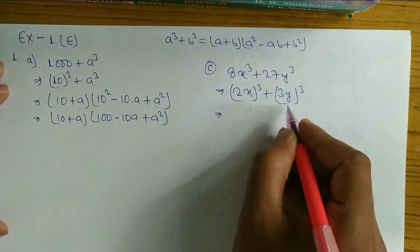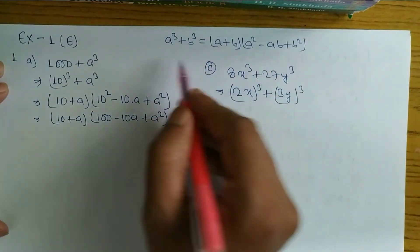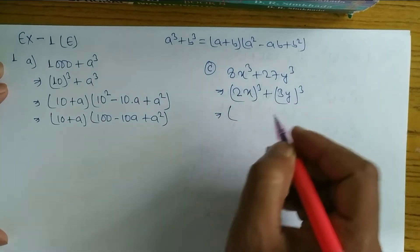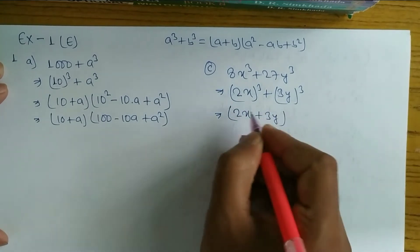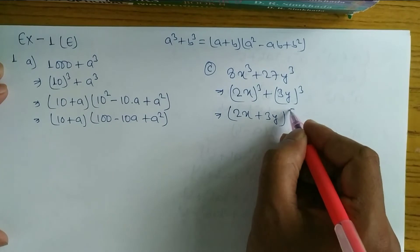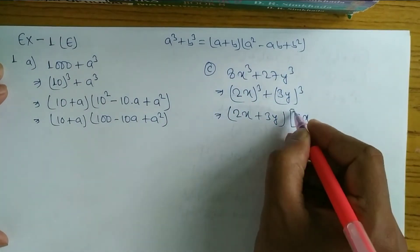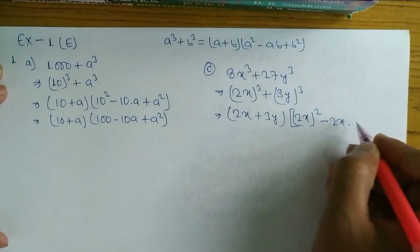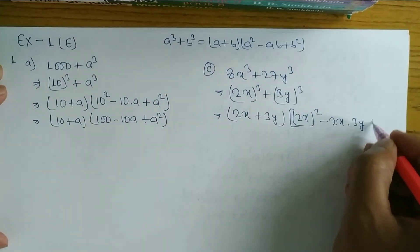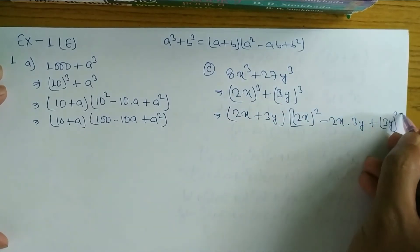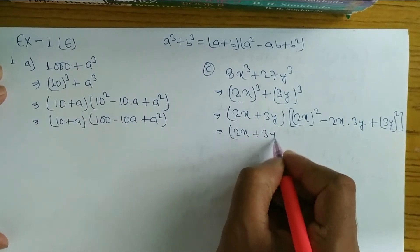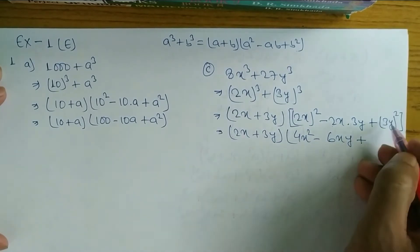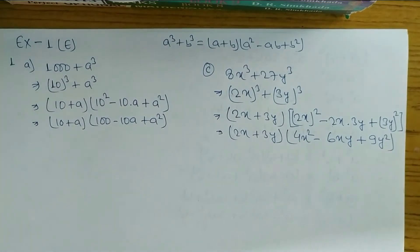For question 1C, in the place of A we have 2X and B we have 3Y. Using the formula A cube plus B cube equals A plus B times A square minus AB plus B square: we write 2X plus 3Y, times 2X whole square minus 2X times 3Y plus 3Y whole square. Solving: 2X plus 3Y times 4X square minus 6XY plus 9Y square. Hope you understand this question.